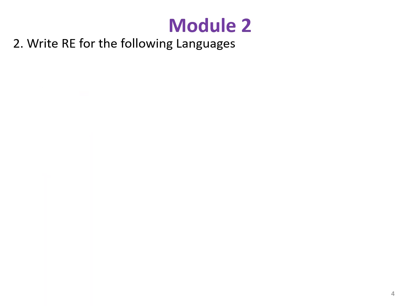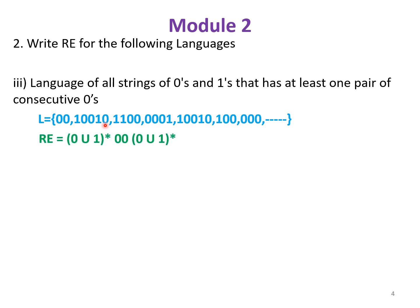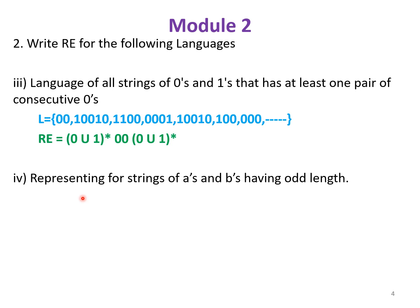Next language is all strings over {0,1} that have at least one pair of consecutive zeros. Possible strings have two consecutive zeros with any strings of zeros and ones before and after. The regular expression consists of (0∪1)* followed by 00 followed by (0∪1)*.